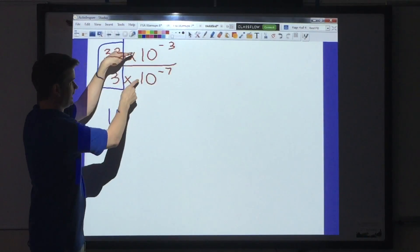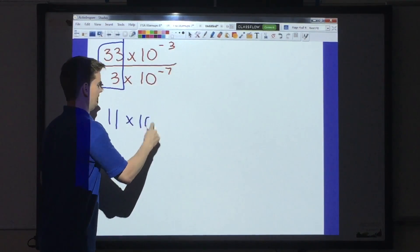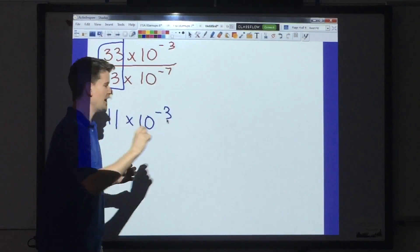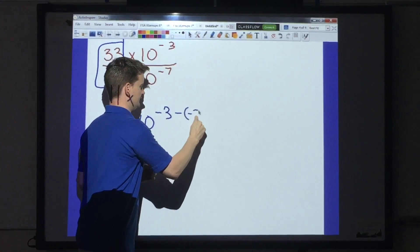Now I want to go and I want to deal with my like bases. So, times 10. And I'm going to have negative 3 minus a negative 7.